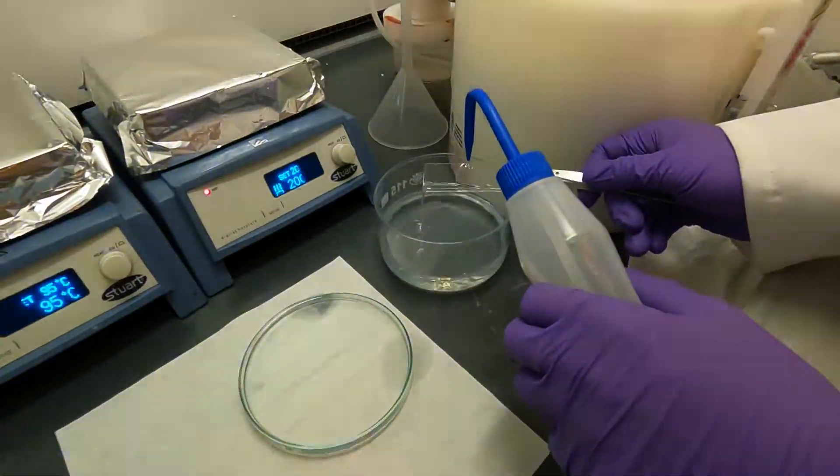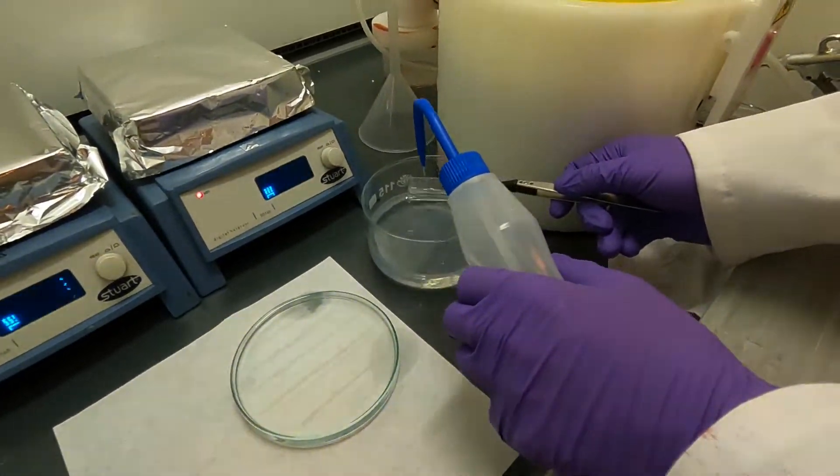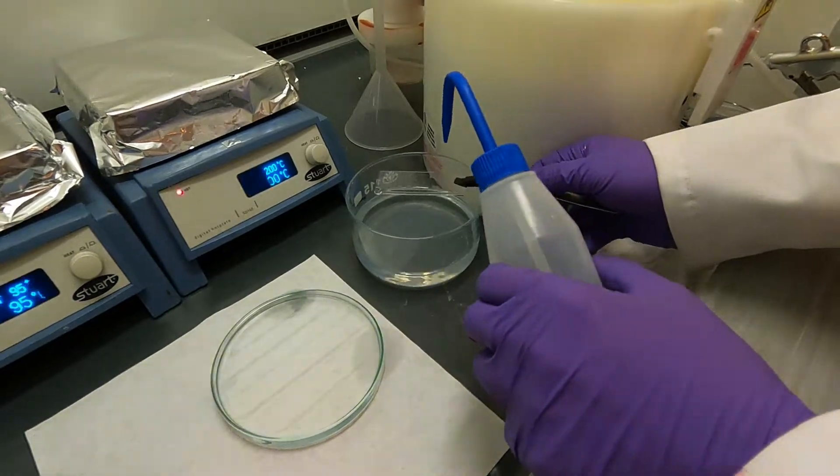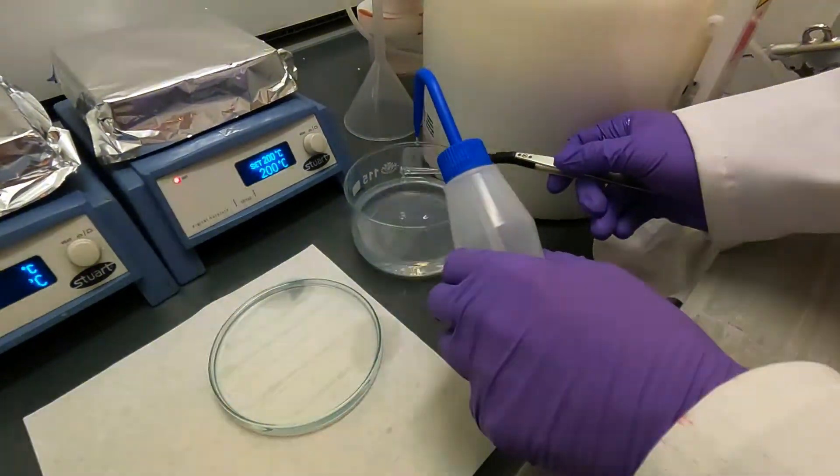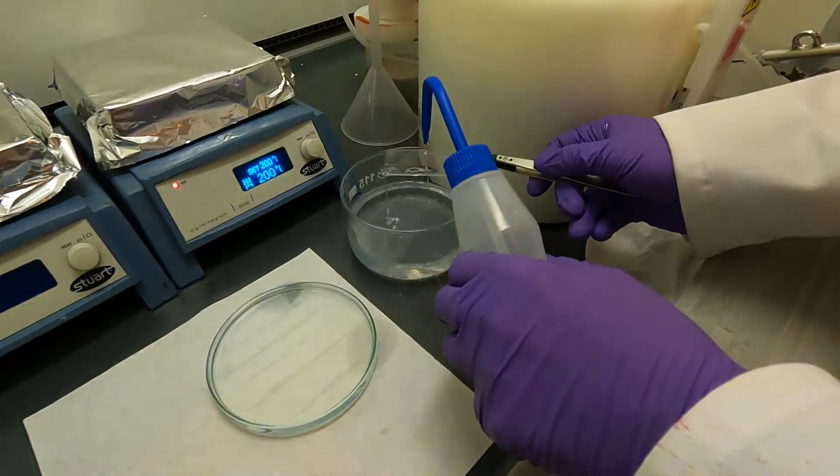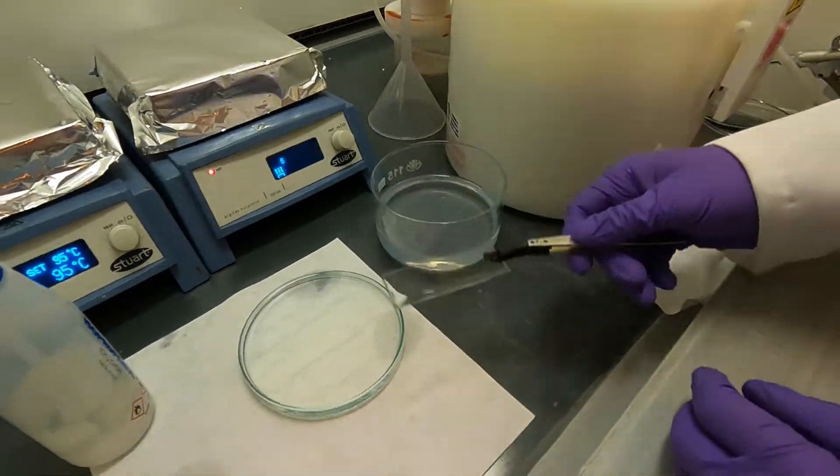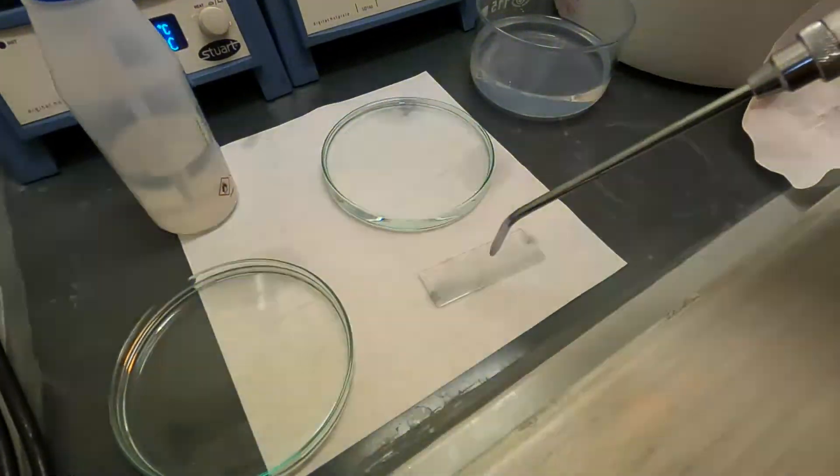The structure should be robust at this point because the SU-8 has quite strong adhesion. I usually tend to avoid squirting isopropanol directly at the structures. Rather, I let it trickle down over the structures by sending the isopropanol near the edge. I'm going to put it now on the piece of paper and blow it dry.